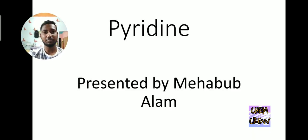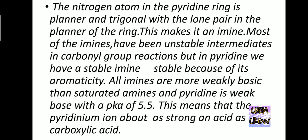Hello, my topic is pyridine. The nitrogen atom in the pyridine ring is planar and trigonal with the lone pair in the plane of the ring. This makes it an imine. Most imines have been unstable intermediates in carbonyl group reactions, but in pyridine we have a stable imine, stable because of its aromaticity.